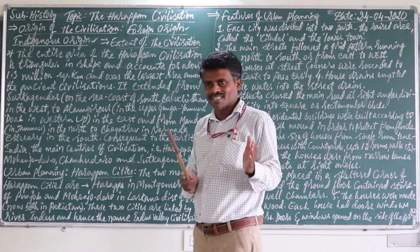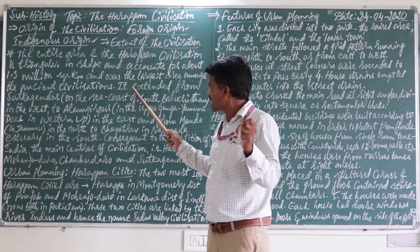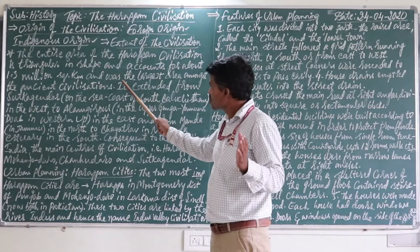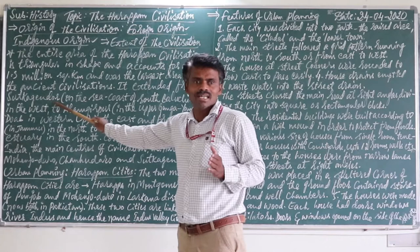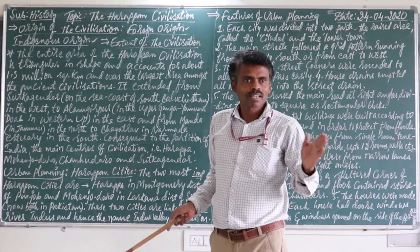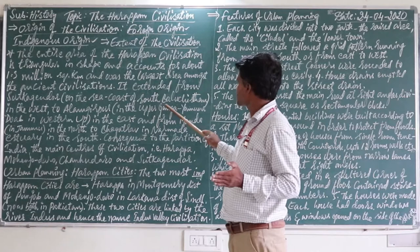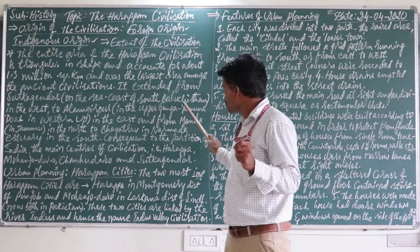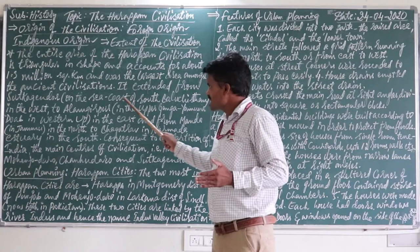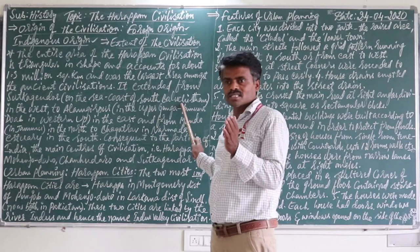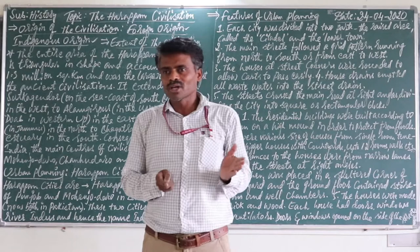What is the extent of the civilization? The largest site is Surkagendor, located on the sea coast of south Balochistan — the extreme west part. If you take a map, you will know the directions. Surkagendor is located on the sea coast of south Balochistan in the west. When we come to Alamgirpur, it is located in the upper Ganga-Yamuna Doab, in the east, in India. I will show you the map.